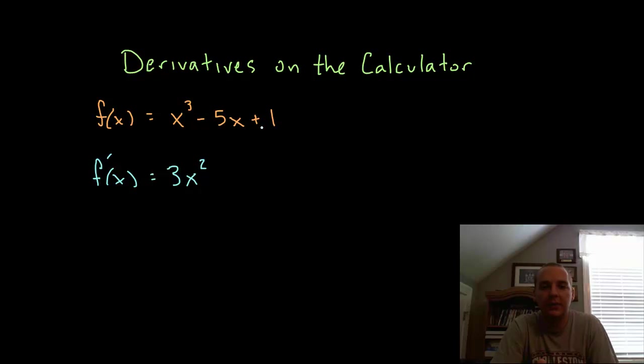The derivative for x cubed minus 5x plus 1 would be 3x squared, that would be the derivative of x cubed minus 5, that's the derivative of minus 5x, and then the derivative of 1 would be 0.